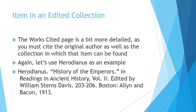The works cited entry for an item in an edited collection is more detailed because you're having to do two things: you have to give credit to the original author of the work and you have to give credit to the collection in which that excerpt can be found. So again, let's use Herodianus as an example. The works cited entry starts with Herodianus — that's the name of the original author. There's no date given for when he published that book, so you leave the date out.